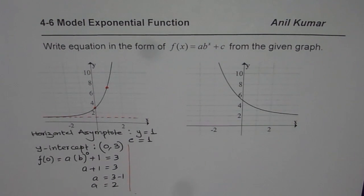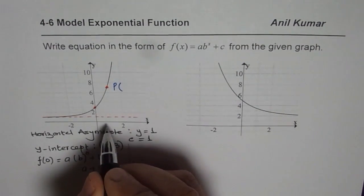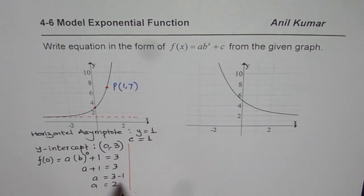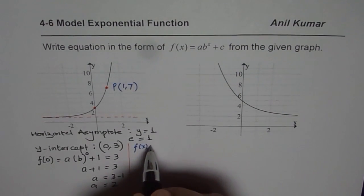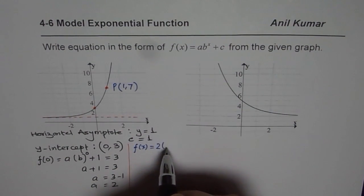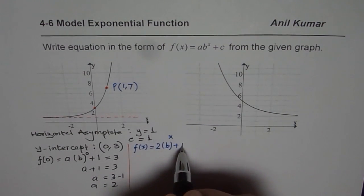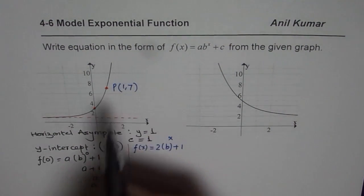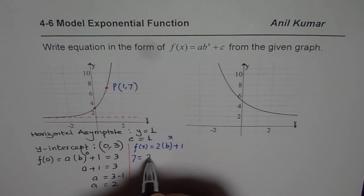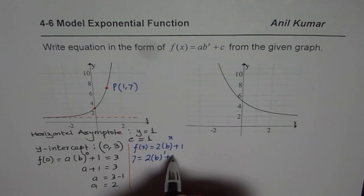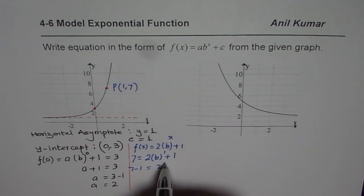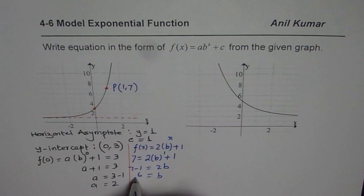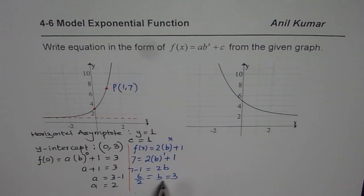Now we use a point to find b. The point we identified was (1, 7). Substituting into f(x) = 2·b^x + 1: 7 = 2·b^1 + 1. So 7 − 1 = 2b, which gives b = 6 ÷ 2 = 3. So we get b = 3.